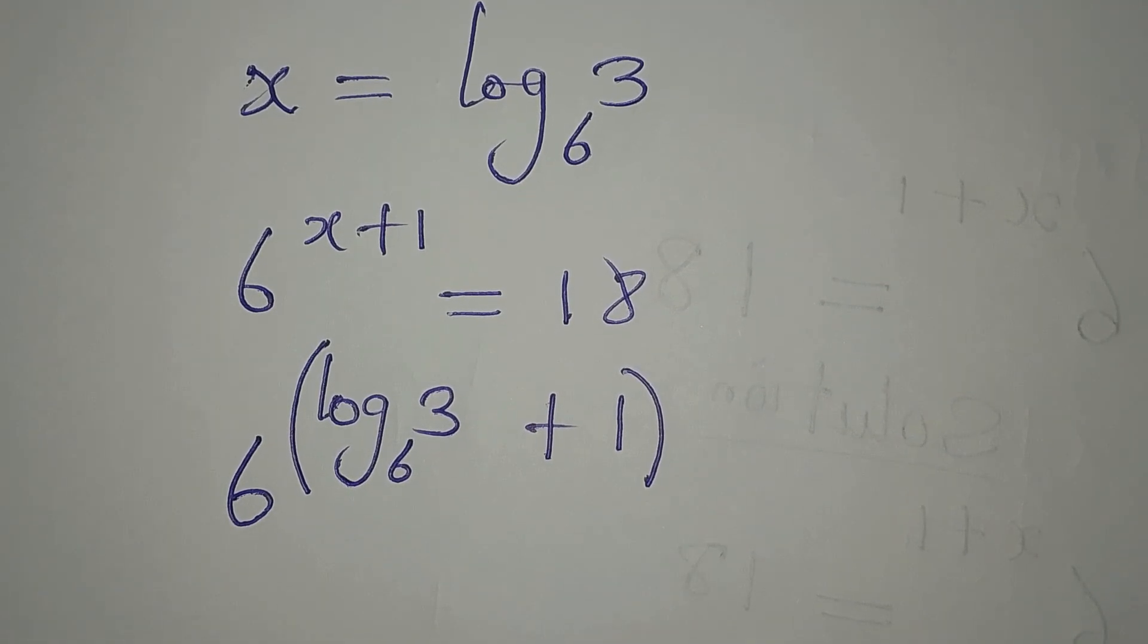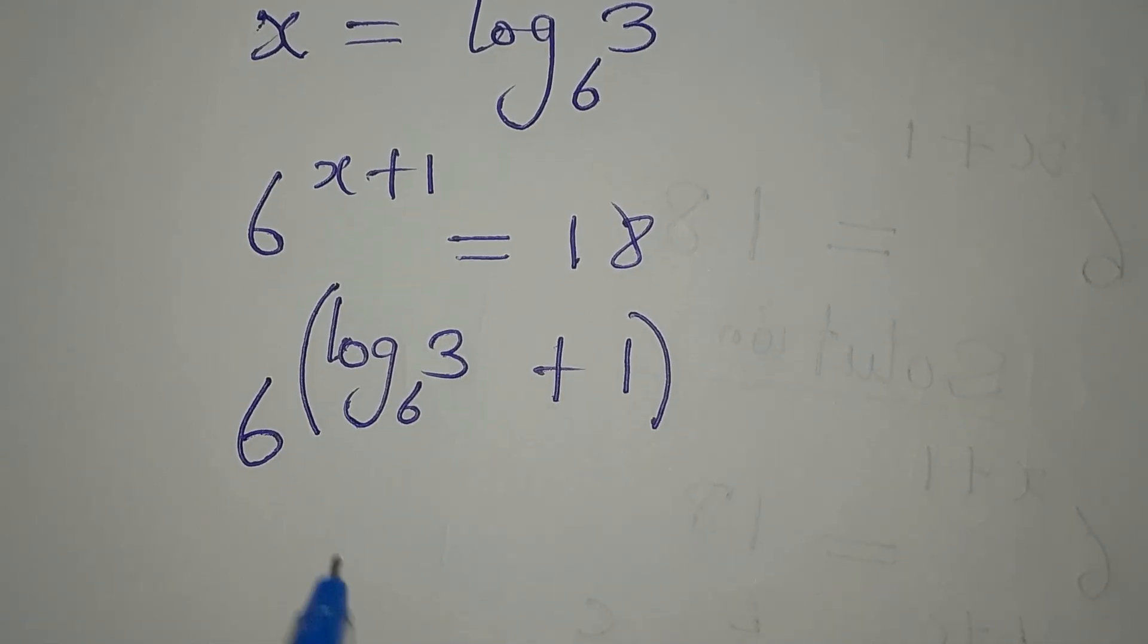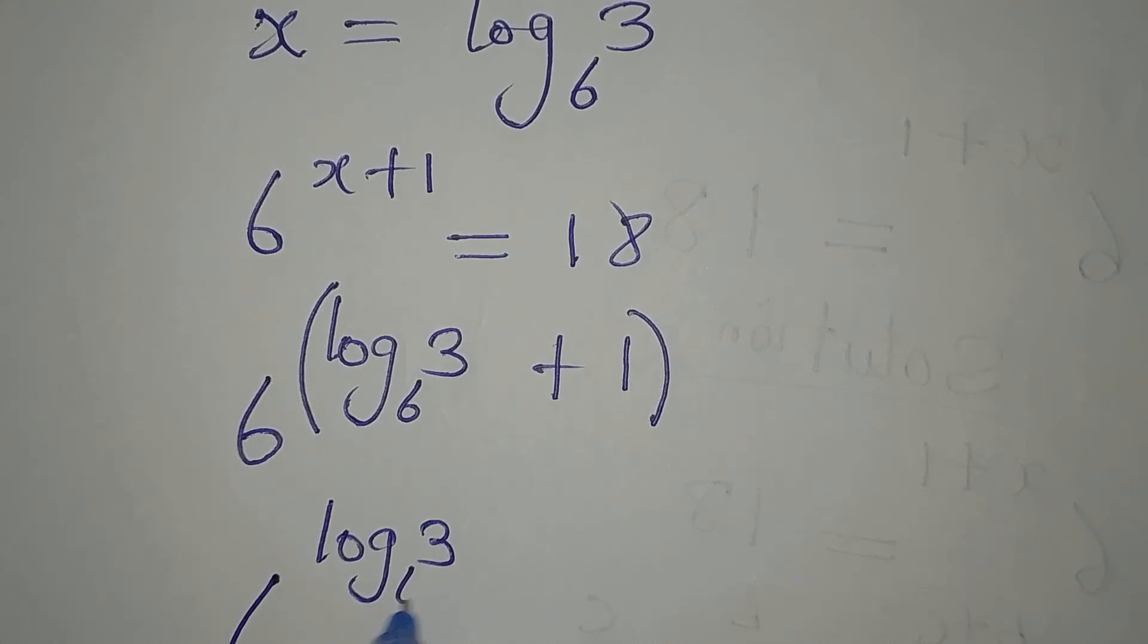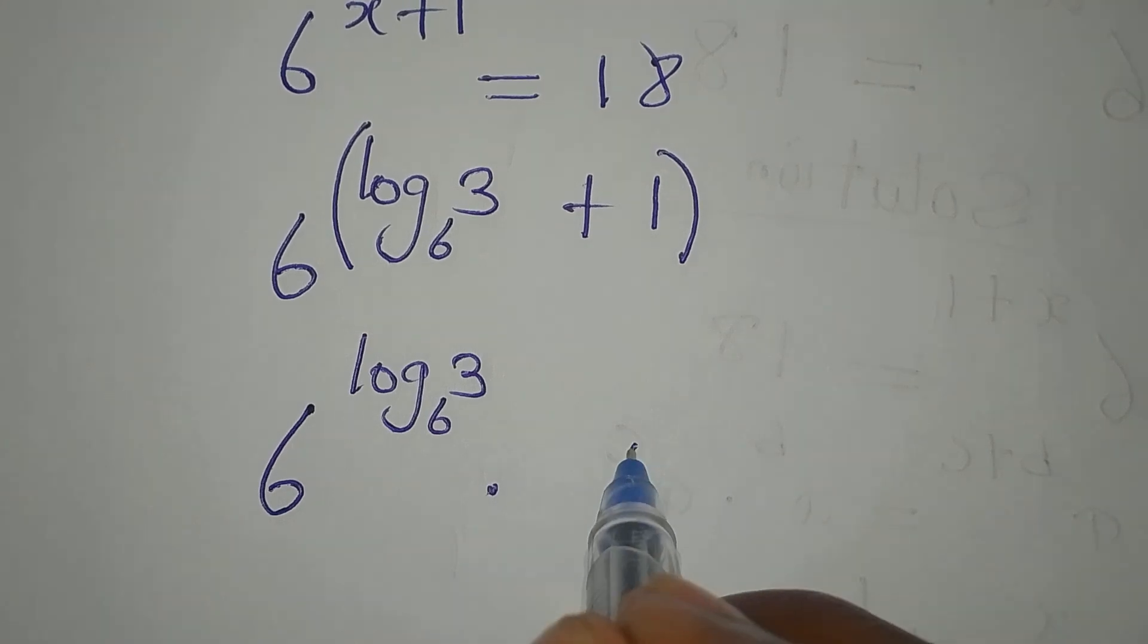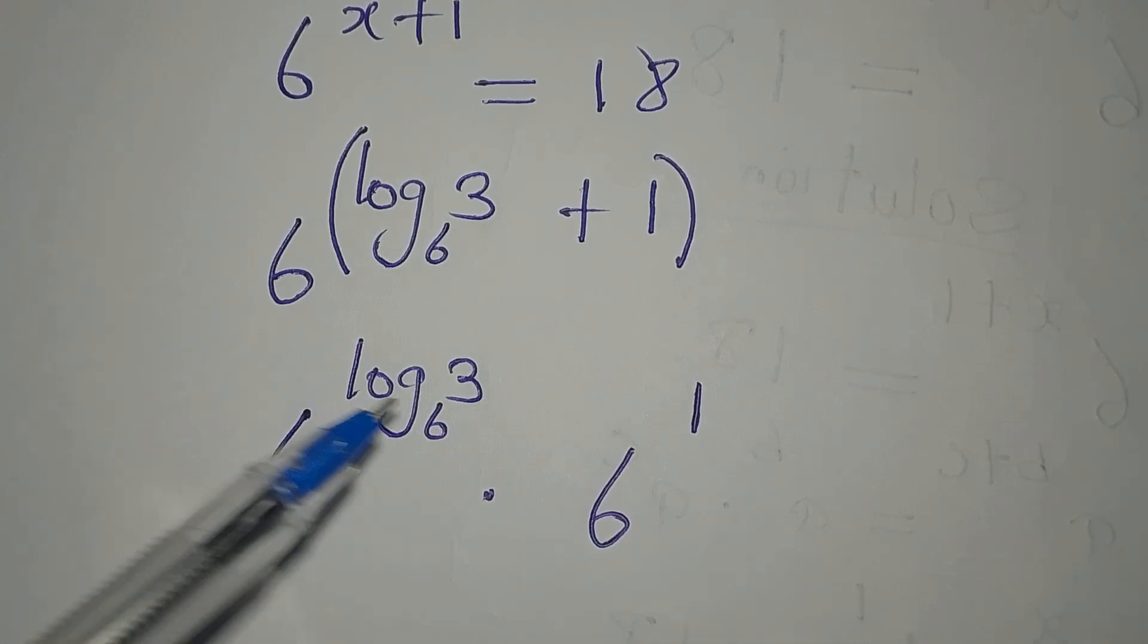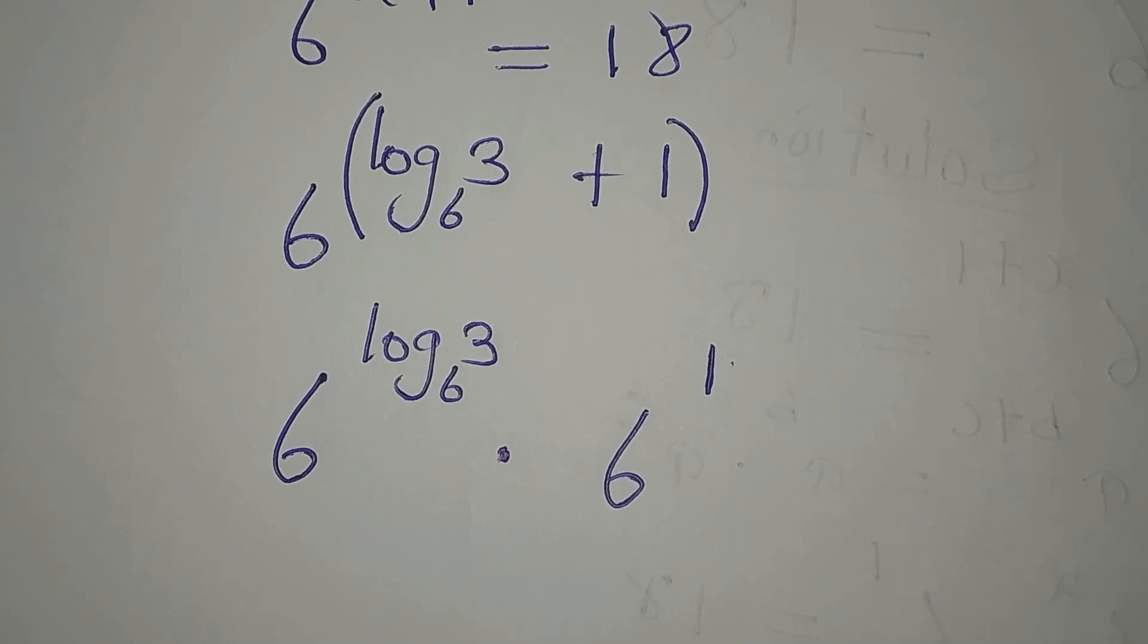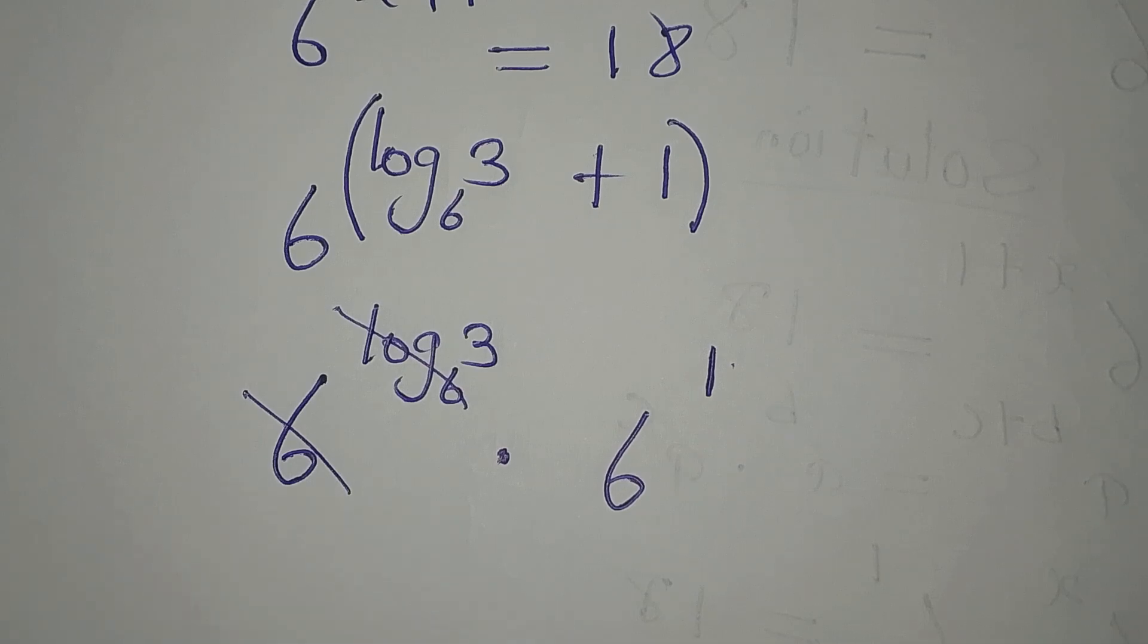And then we will now apply another law of indices to see if we're going to have 18. And the law is 6 to the power of log 3 to base 6, multiply by 6 to the power of 1. This is because if I pick one of the bases, I'll have the 6, then add the two powers since we are multiplying them.